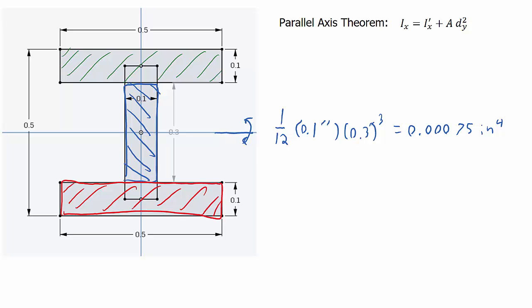Now, this green rectangle might be less obvious. We know how to calculate its rotation around its centroid. That's easy. That's one-twelfth times its base, which is 0.5 inches, times its height, which is 0.1 inch cubed. But that's around its centroid. The axis of rotation is way down here, so we need to move that down. So that's going to be plus its area, which is 0.1 inch times 0.5 inch, times the distance we're moving. In this case, that distance is 0.2 inches. And so that means that the total area moment of inertia for this green shape is 0.00204 inches to the fourth.